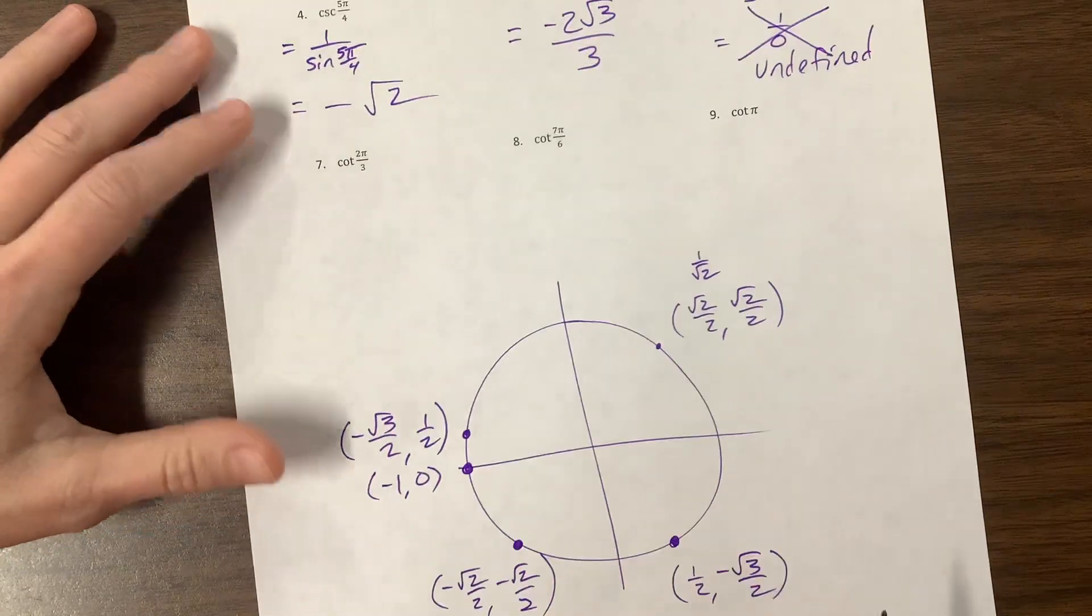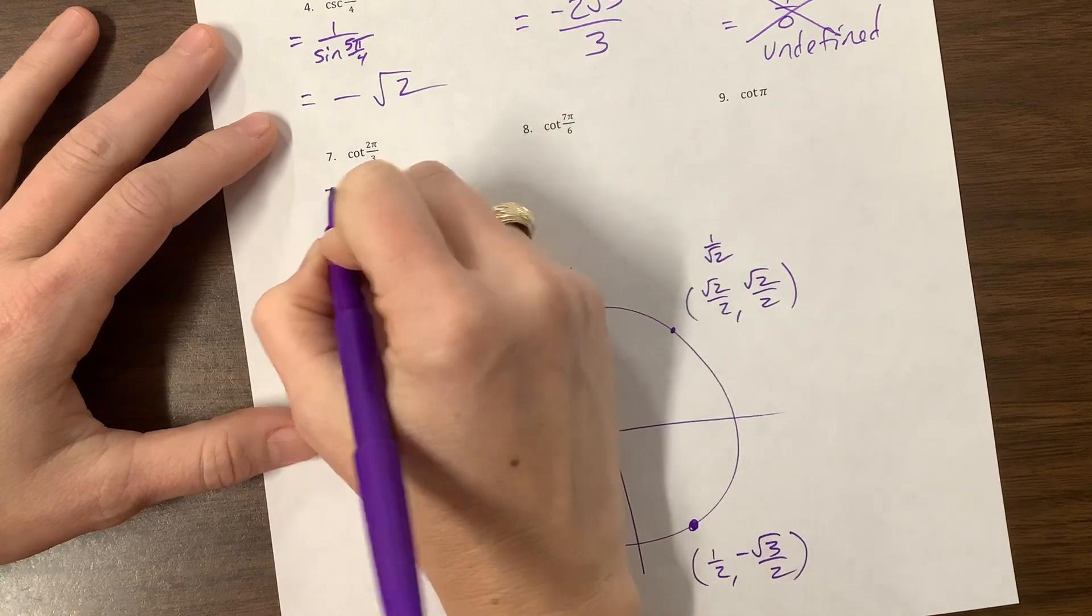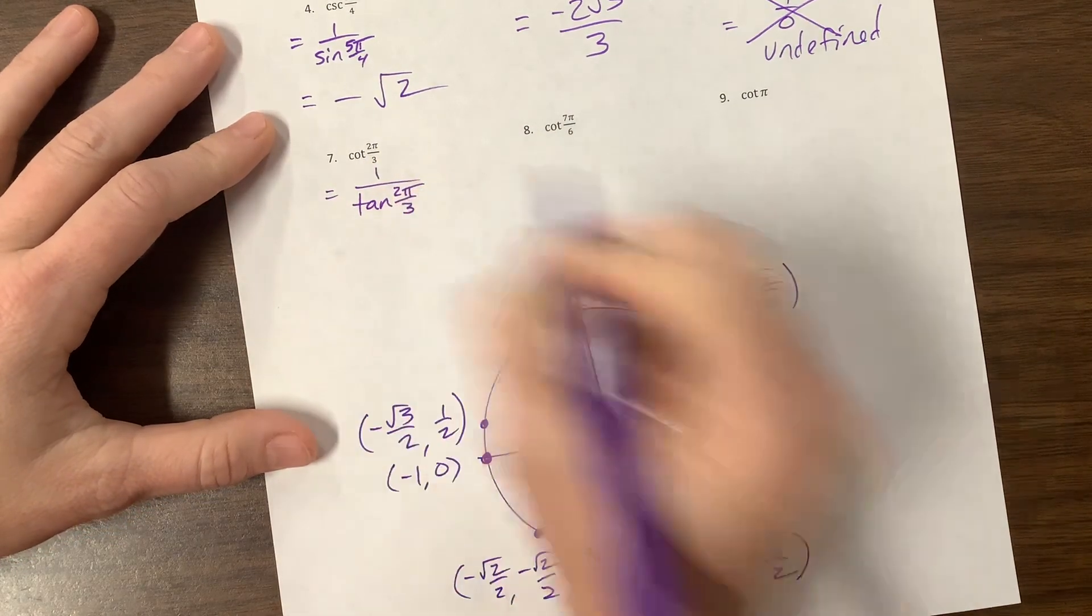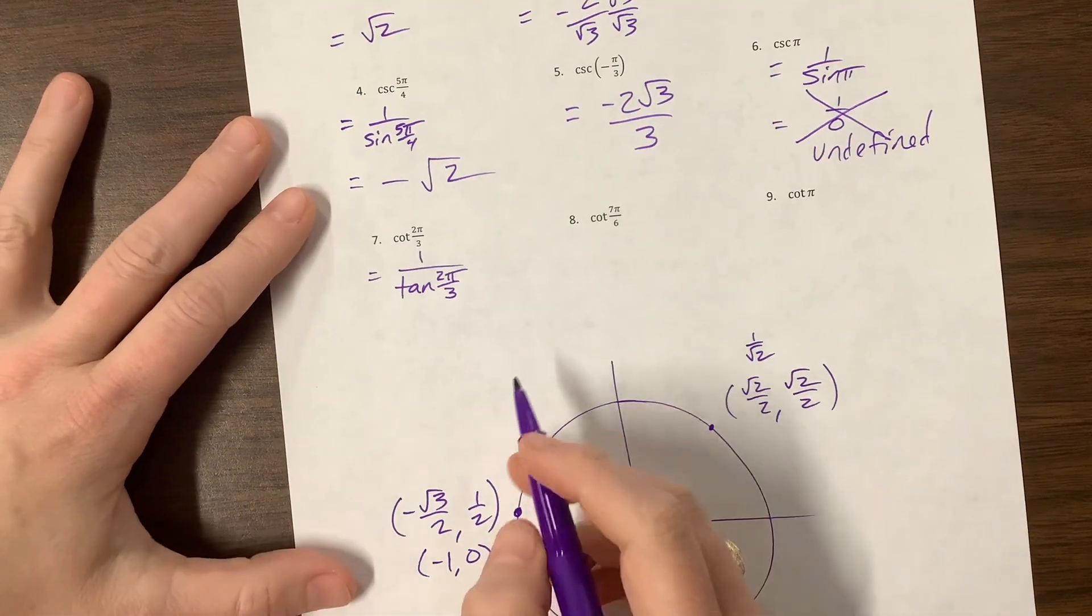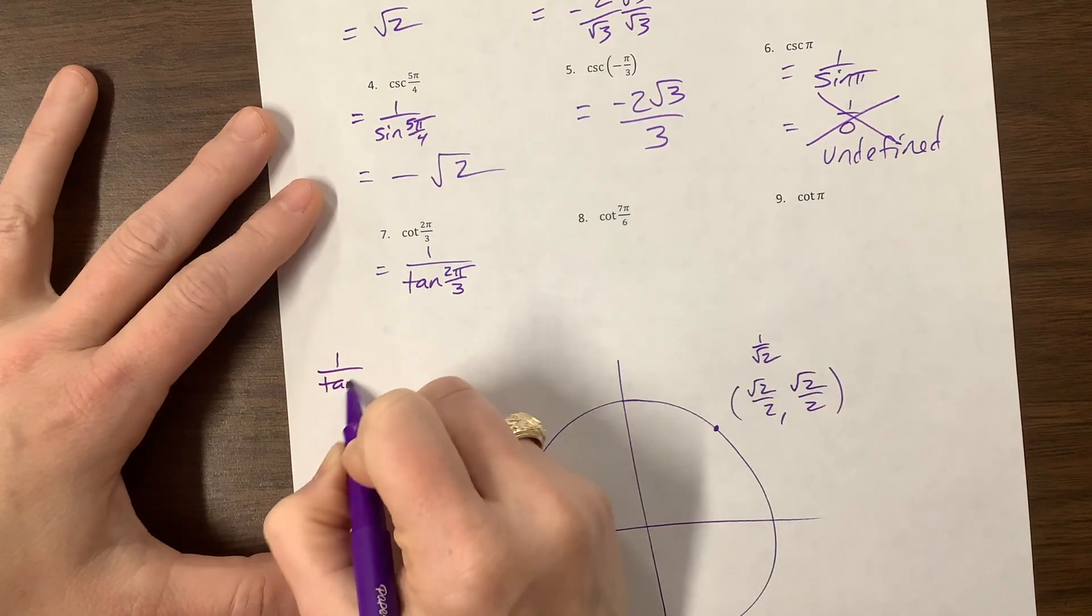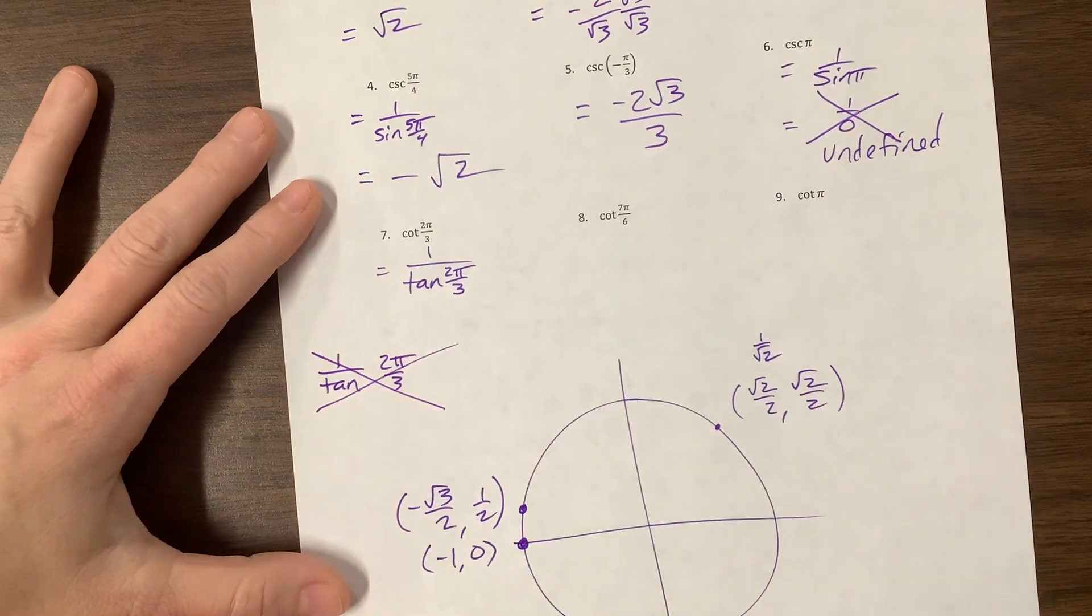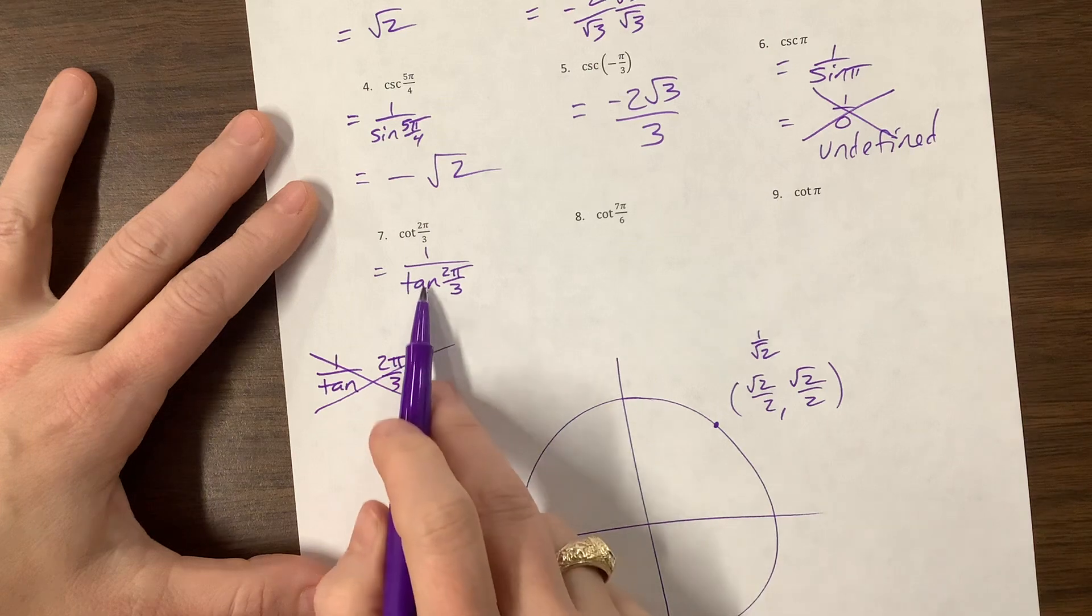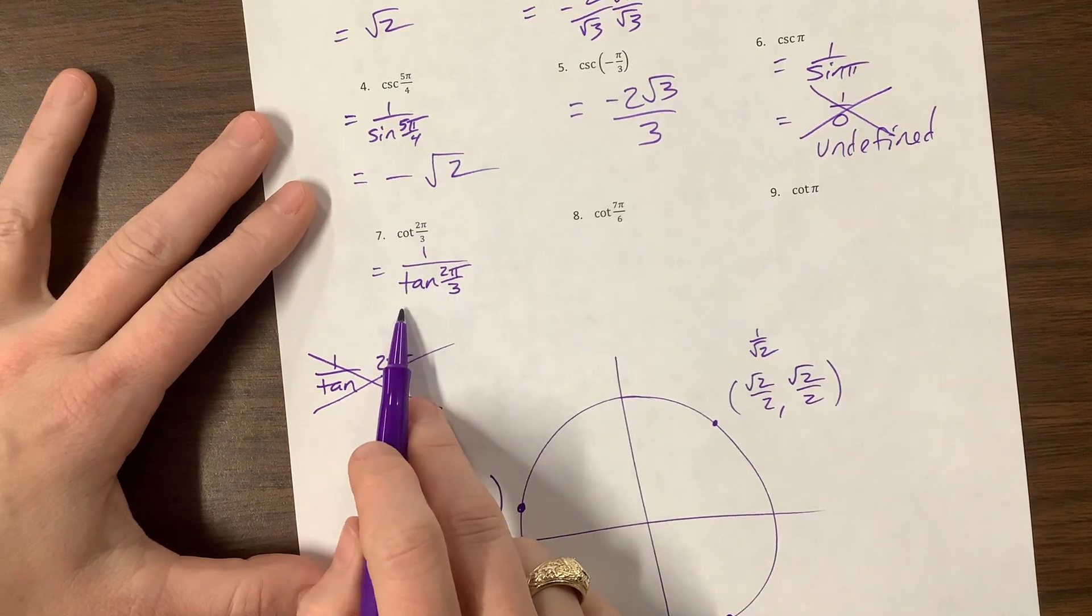All right, cotangent. Okay, so cotangent is the reciprocal of tangent. So this is 1 over tangent of 2 pi over 3. Notice my notation here. I think that I've seen kids do something, this is wrong, don't do this, this is wrong. But I've seen kids do something like this, and then they put this 2 pi over 3 out here. That, no, don't do that. It's not 1 over tangent times 2 pi over 3, it's 1 over tangent of 2 pi over 3. So that has to stay there.